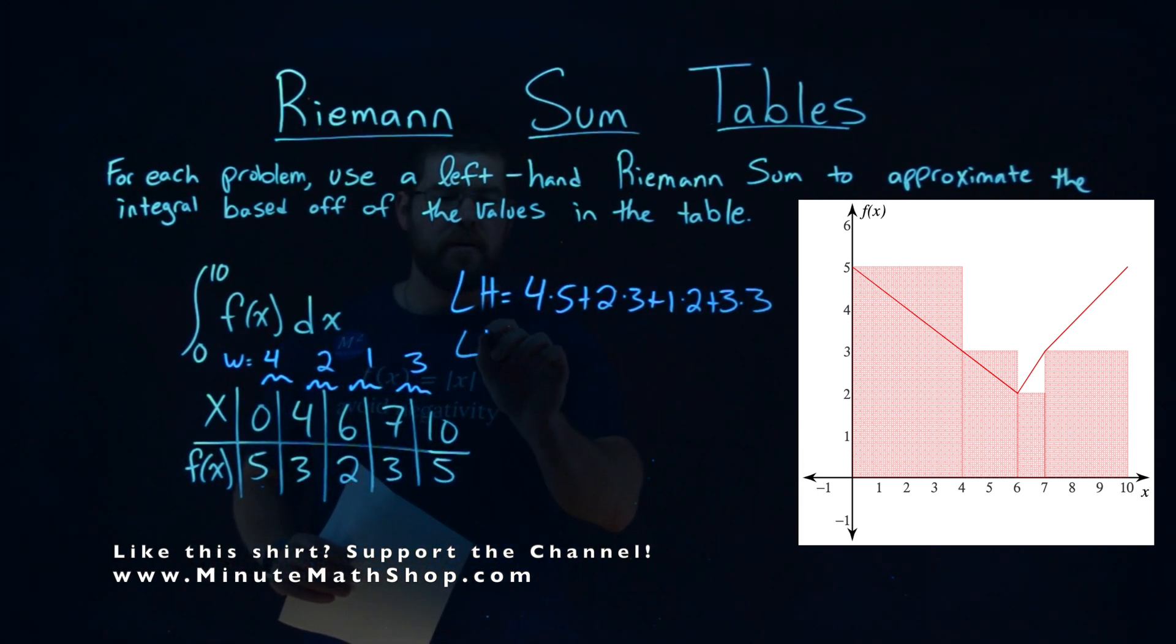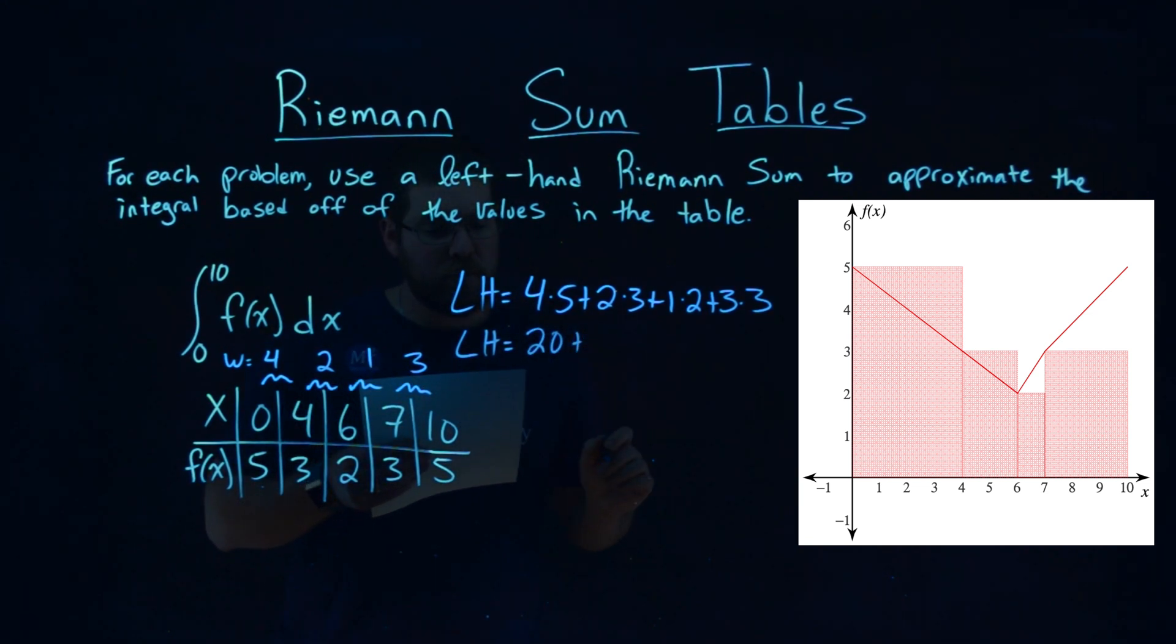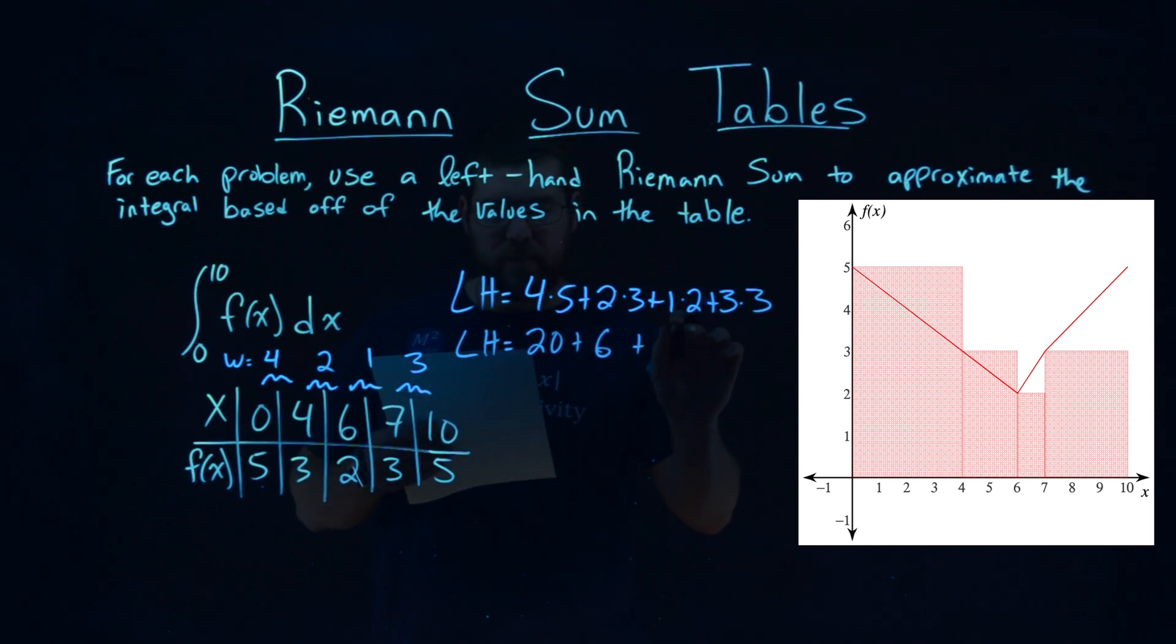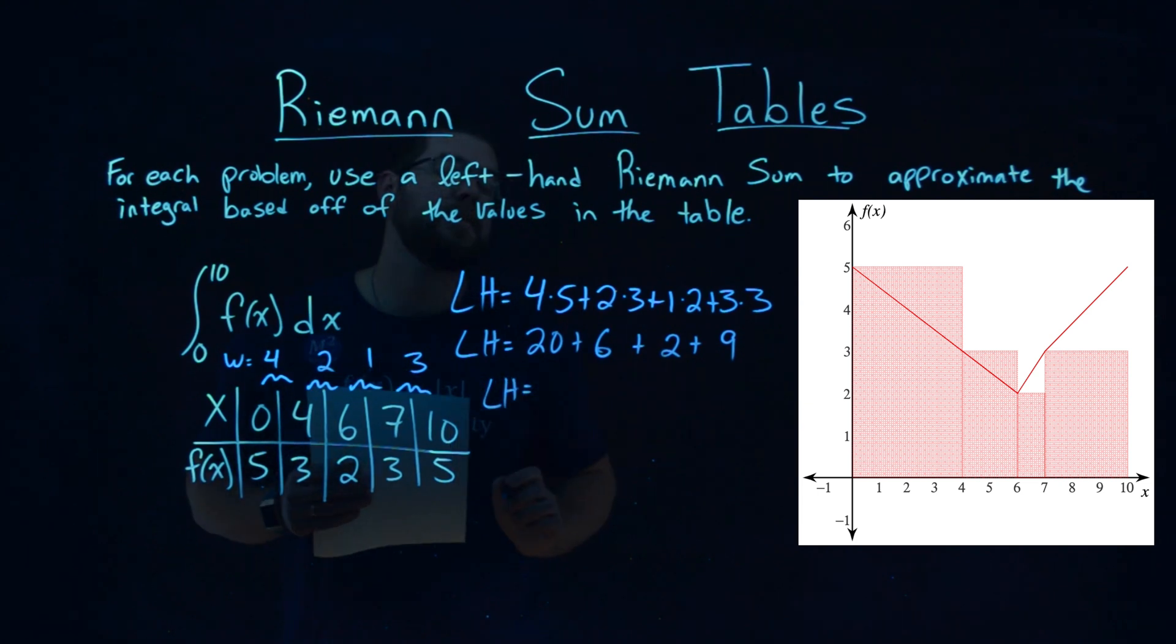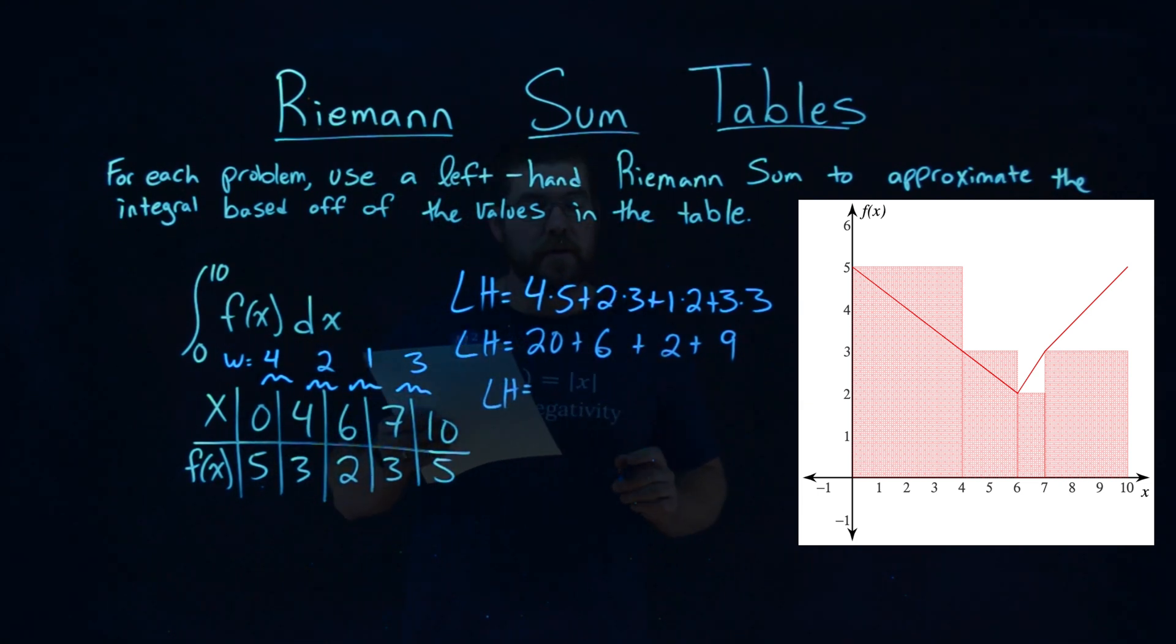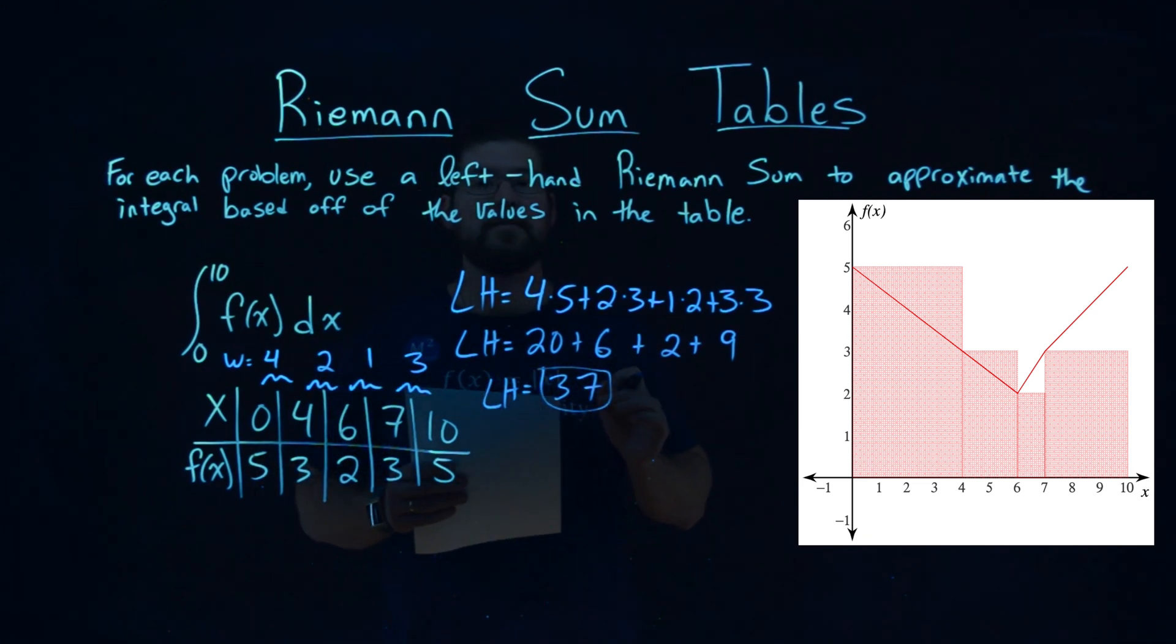And now, let's simplify. 4 times 5 is 20. 2 times 3 gives me 6. 1 times 2 gives me 2. And 3 times 3 is 9. When we add all of them together, 20 plus 6 plus 2 plus 9, we get 37.